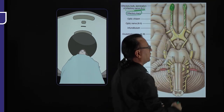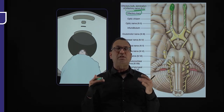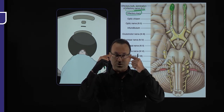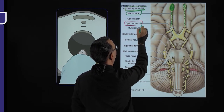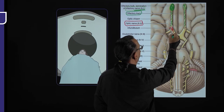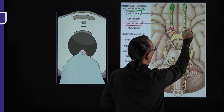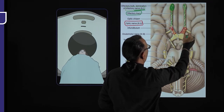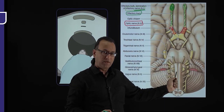Cranial nerve 1 is the nerve of the telencephalon, whereas cranial nerve 2, the optic nerve, is the nerve of the diencephalon, bringing visual information. Here we can see the optic nerve on both the right and left sides. Cranial nerve 2 is the nerve of the diencephalon.